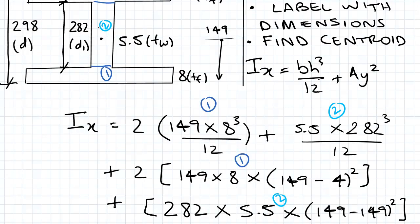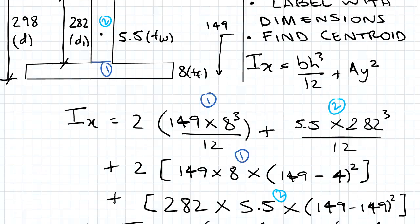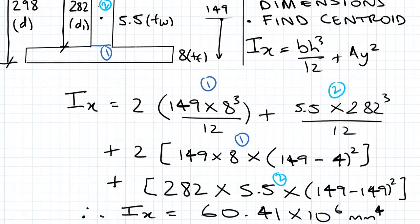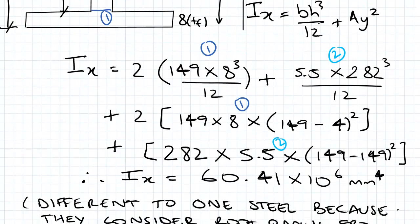And what we find, if you've plugged in all these values for the IX, is it's roughly 60.41 times 10 to the power of 6.